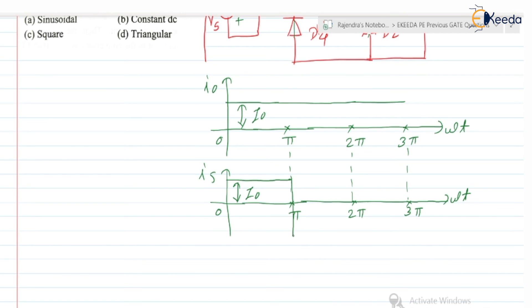So here from pi to 2 pi, when diodes D3, D4 conducts at that time, yes, it is equal to minus I0. This is equal to minus I0. And after 2 pi again, the same cycle repeats.